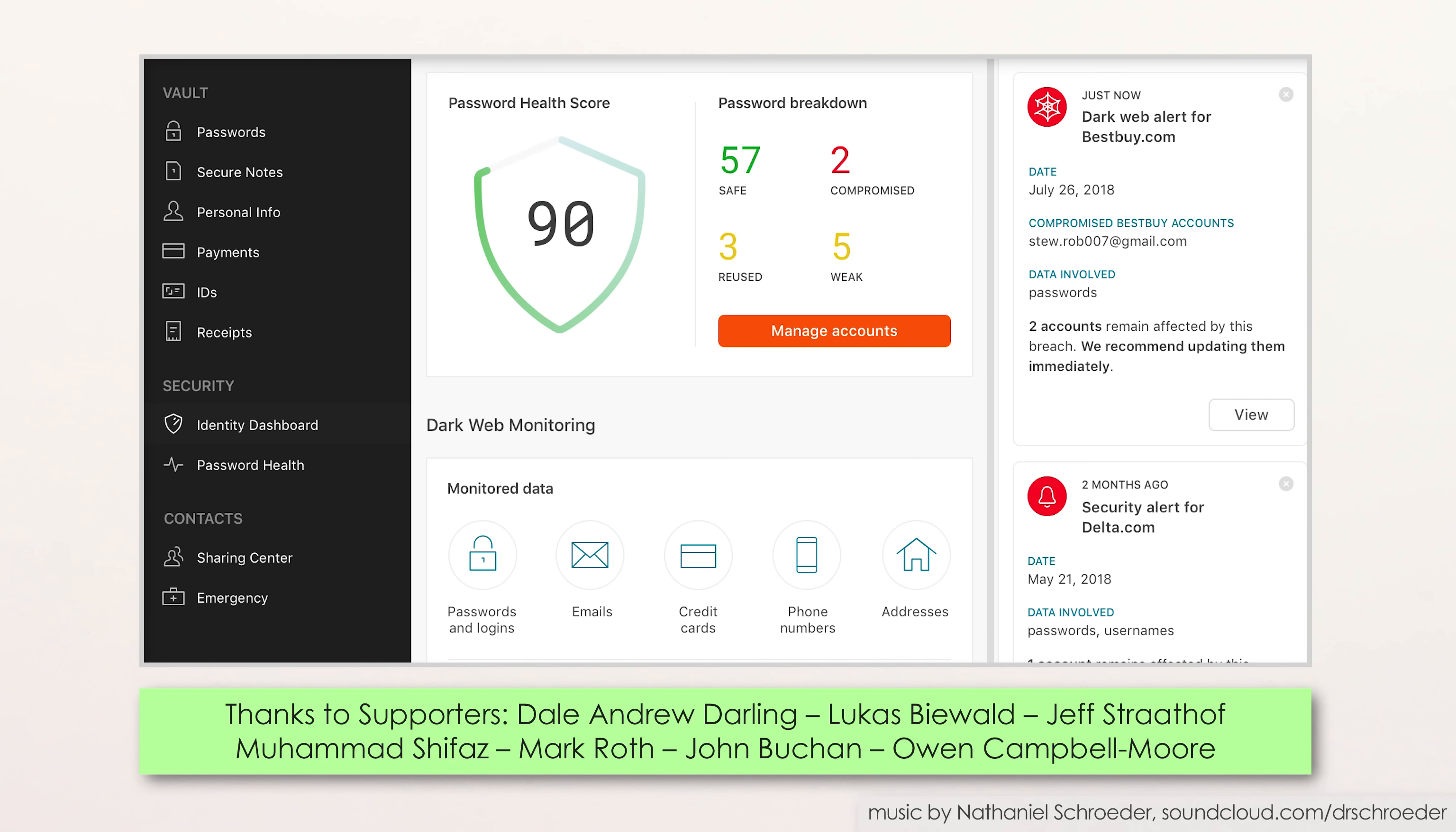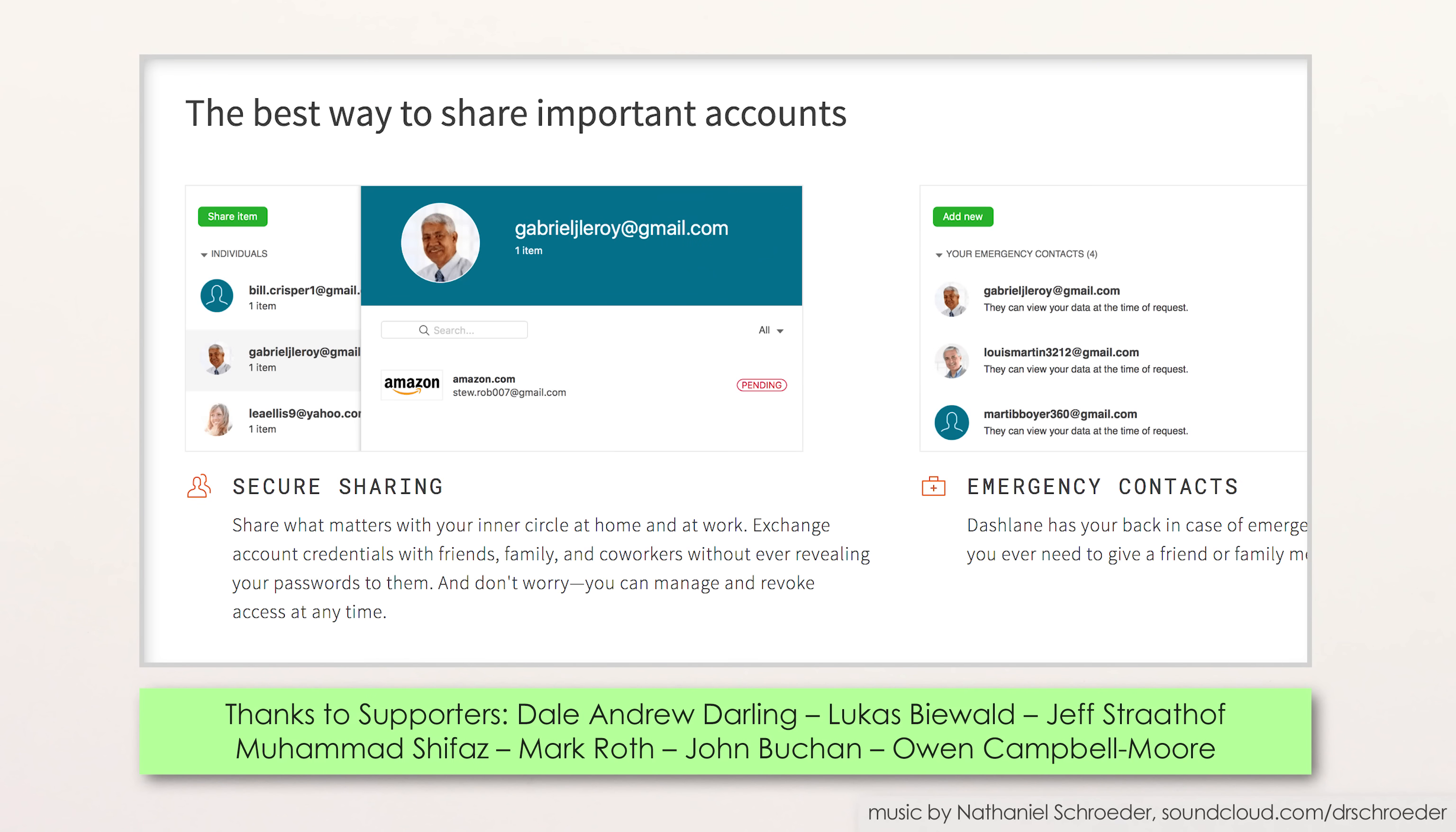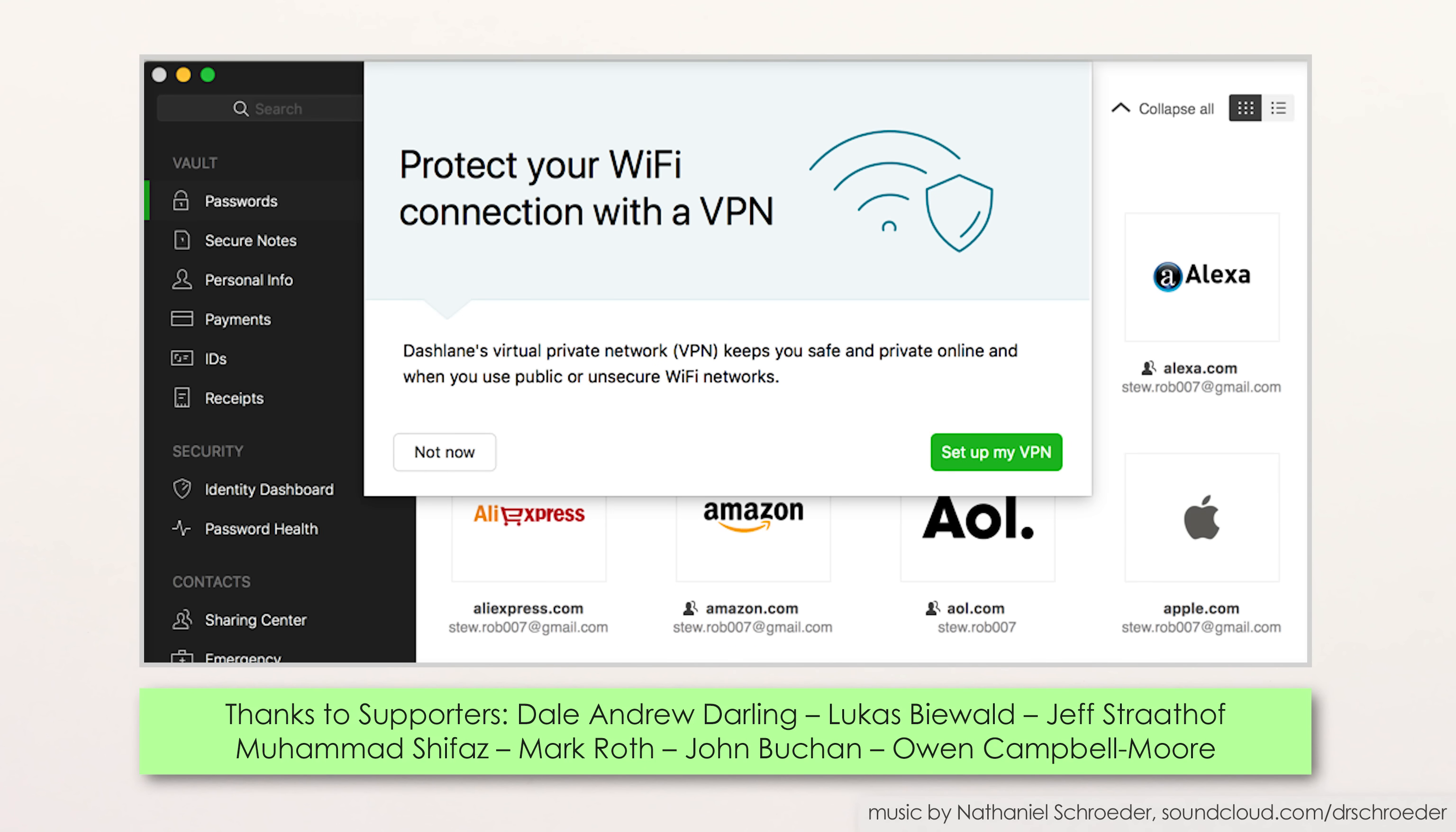And Dashlane is more than just a password manager. It lets you know when your passwords are old or weak, or when a site or app you use has been hacked so you know to change your passwords. It encrypts and lets you securely share passwords with family and coworkers. It can be used to securely store or share your address, credit card info, and banking info with just the people and sites you want to. It can be used as a VPN, and more.